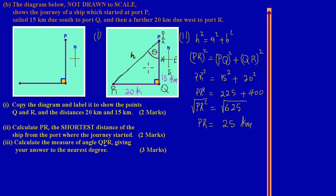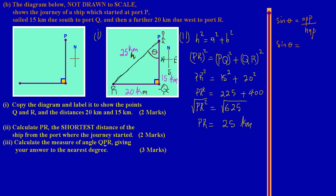From the position of angle theta at P, the side RQ (20 kilometers) is the opposite side. The hypotenuse is the side we found earlier, PR = 25 kilometers. Since I have the opposite and the hypotenuse, I use the sine ratio: sin(θ) = opposite / hypotenuse.